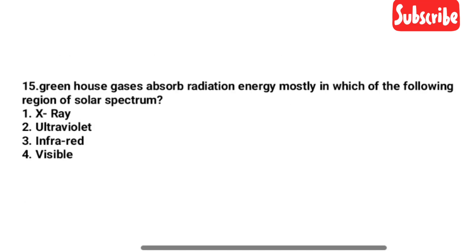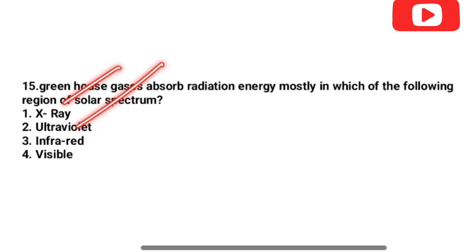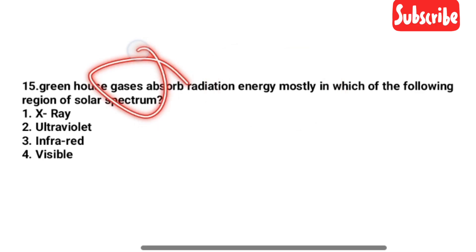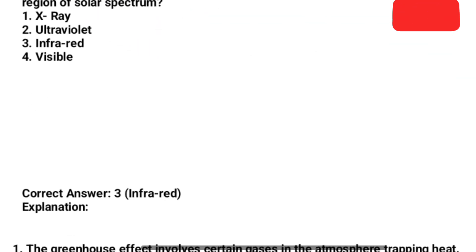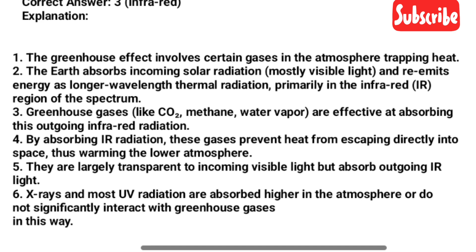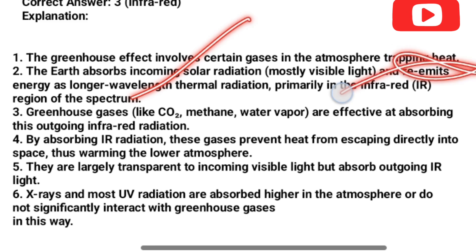Next question: Greenhouse gases absorb radiation energy mostly in which of the following regions of the solar spectrum? Options: X-ray, ultraviolet, infrared, visible. The answer is option number 3 — infrared. The greenhouse effect involves certain gases in the atmosphere trapping heat; Earth absorbs incoming solar radiation and re-emits energy as longer wavelength thermal radiation, primarily in the infrared region of the spectrum.